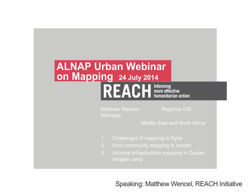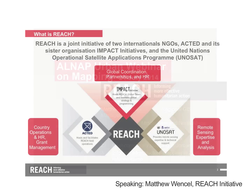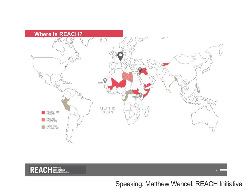Thank you, Paul. I will talk about three separate contexts: highlighting the challenges of mapping in Syria, providing an overview of our host community mapping experience in Jordan, and finishing with a review of our informal infrastructure mapping efforts in Zaatari refugee camp. REACH is a joint initiative of two NGOs — ACTED, based in Paris, and Impact, based in Geneva — also partnering with the UN Operational Satellite Applications Program, UNISAT. REACH's global team is based in Geneva and comprises specialists in data collection, management and analysis, GIS, and remote sensing. We have regional offices covering the Middle East and North Africa, East and Sub-Saharan Africa, and West and Central Africa, as well as numerous short-term deployments as emergencies arise.